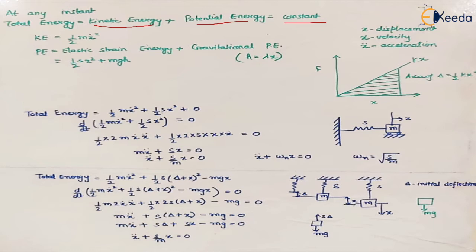Kinetic energy is one-half times mass times velocity squared. We take the mass of the body or system as m, velocity is denoted by x-dot, displacement by x, and acceleration by x-double-dot. So this is the kinetic energy at any instant for the body or system.